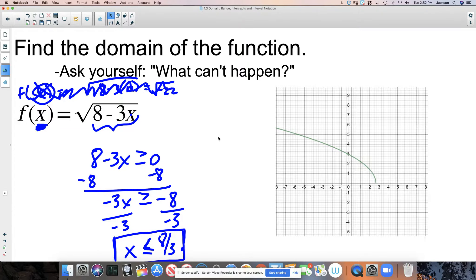Let's take a look at the graph. So what do we see? 8 thirds, for the sake of those of you that don't want to get the calculator out, is approximately 2.7. It's 2.6 repeating.